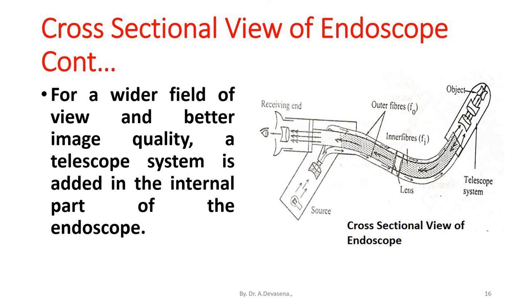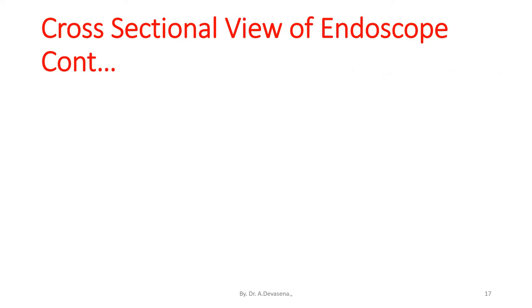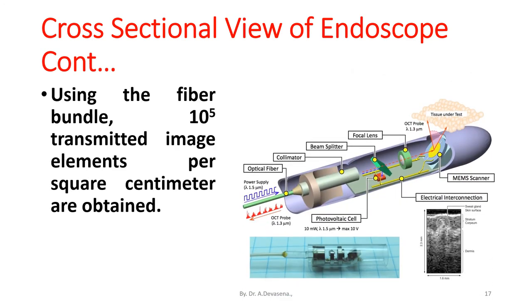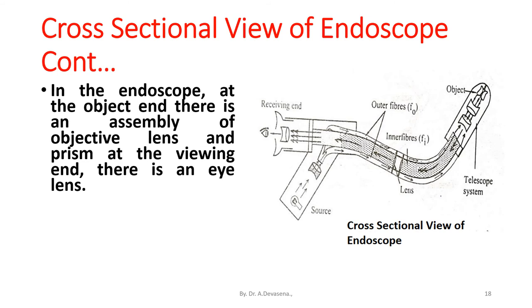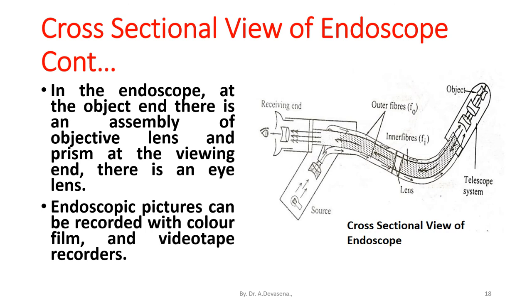In this diagram we are seeing a telescope system used to achieve better image quality. Using the fiber bundle, 10^5 transmitted image elements per square centimeter are obtained. In the endoscope, at the object end, there is an assembly of objective lens and prism. At the viewing end there is an eye lens. Endoscopic pictures can be recorded with color film and videotape recorders.